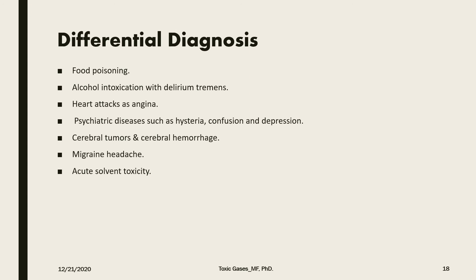Carbon monoxide poisoning may be mistaken with other medical conditions such as food poisoning, alcohol intoxication, heart attack and manifestations of angina, psychiatric disorders such as hysteria, confusion and depression. Cerebral tumors and cerebral hemorrhage may also be confused with carbon monoxide poisoning. Chronic cases might be confused with migraine and other chemical toxicities such as acute solvent toxicity.